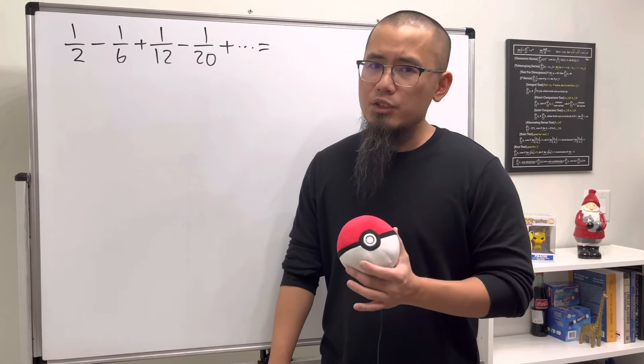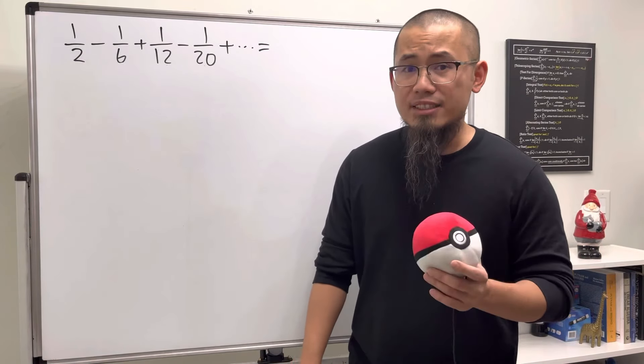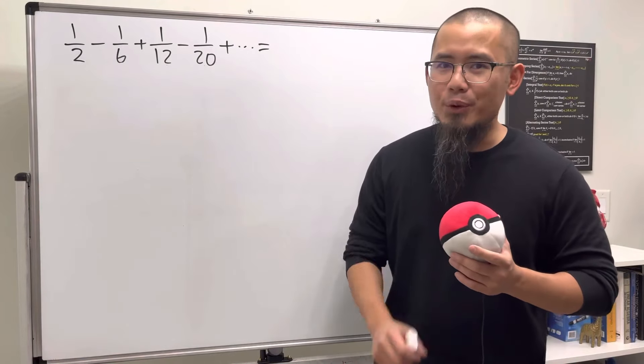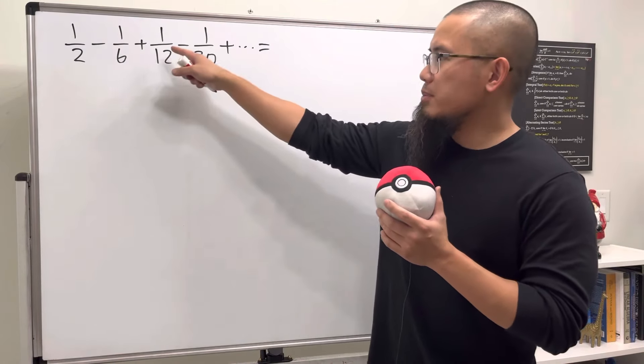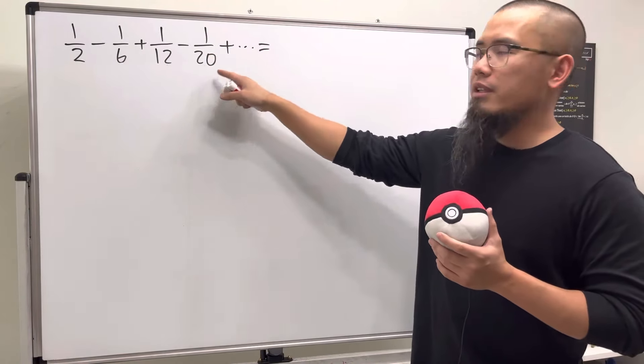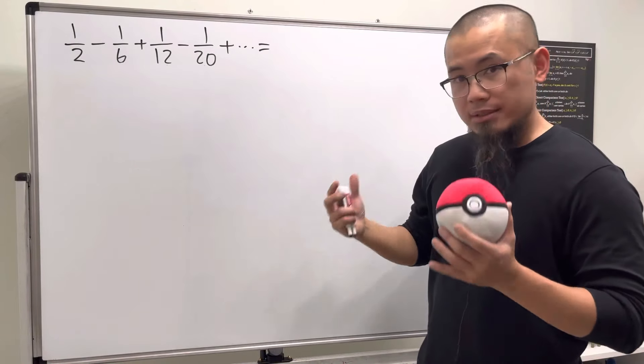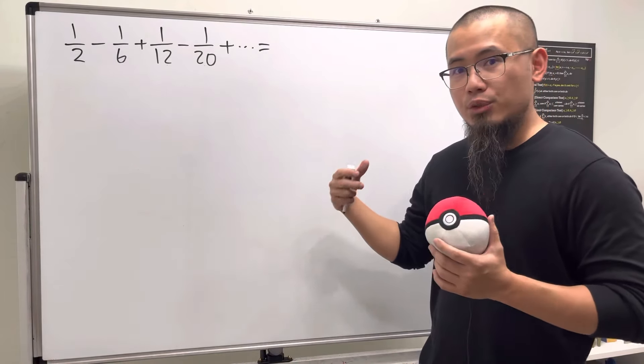I just noticed that I have never shown you guys an alternating telescoping series, so this is one for you. We have 1/2 - 1/6 + 1/12 - 1/20 and so on. It's always a good idea to put this kind of thing into a single notation.